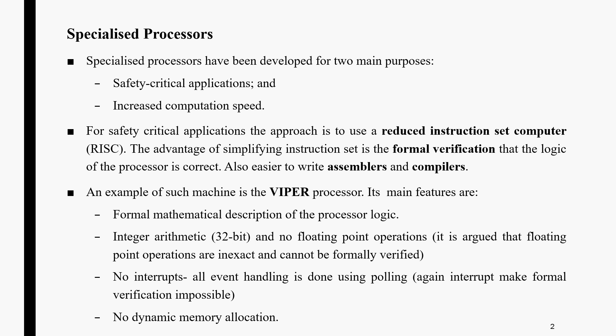It is also easier to write the assembler and compiler. One example of the reduced instruction set is the VIPER processor. The main features of the VIPER processor include formal mathematical descriptions of all the processor logic, 32-bit integer arithmetic, and no floating point operations — as floating point operations are inaccurate and cannot be formally verified. There are no interrupts; all event handling is done using polling, since interrupts make formal verification impossible. There is also no dynamic memory allocation.